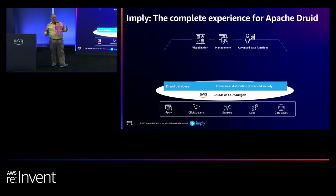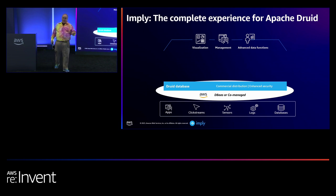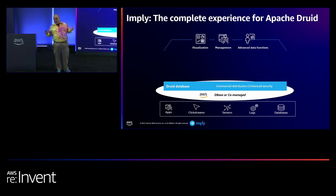I work for Imply. You've seen this model before — people create open-source software and after a few years decide to make a company around it. The people who created Apache Druid founded Imply in 2015. Our founders really believe they don't want to live in a world where only a few big companies control all information. How do you have a world where information is actually owned by the people who should have it? Open source. The purpose of Imply is to help open source win, particularly around open-source Druid.